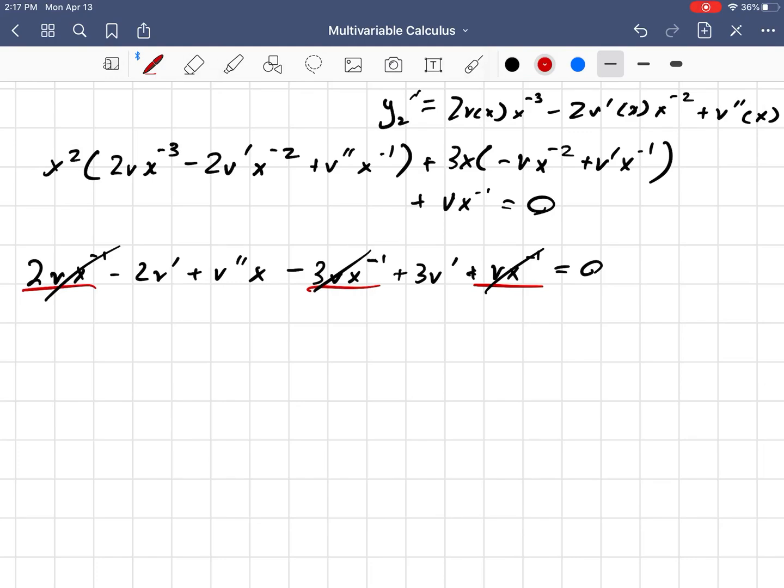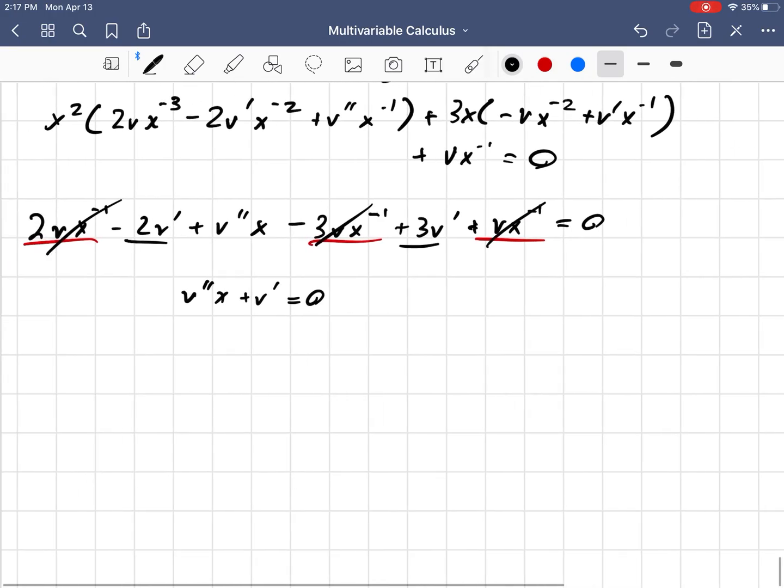2 minus 3 minus 1, and then add a 1, that's gone, okay. That's reassuring that I have done this right. Now we have -2v' plus 3v'. So v'' times x + v' is 0.